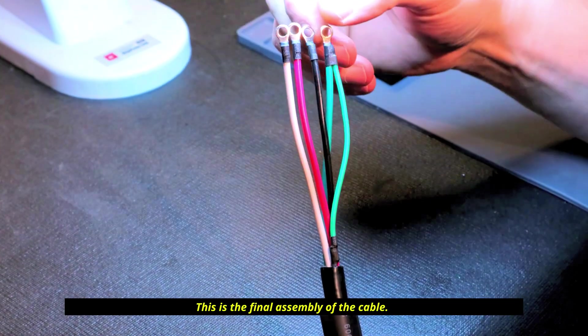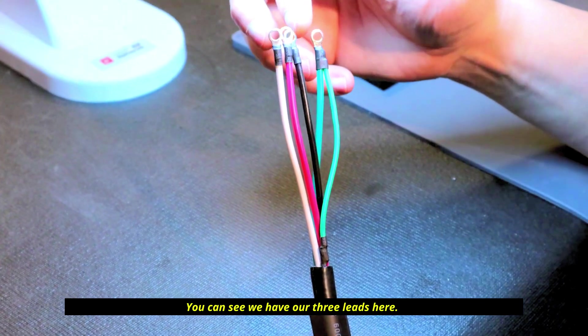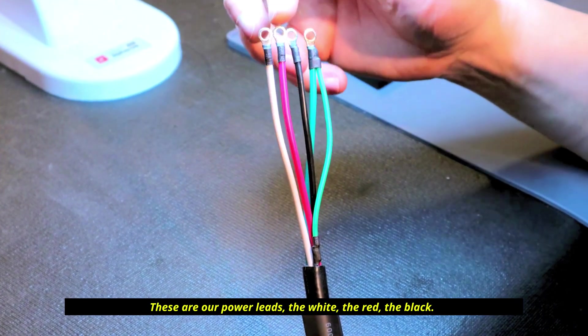This is the final assembly of the cable, the opposite end. You can see we have our three leads here. These are our power leads - the white, the red, the black. The green, once again, is isolated for ground.